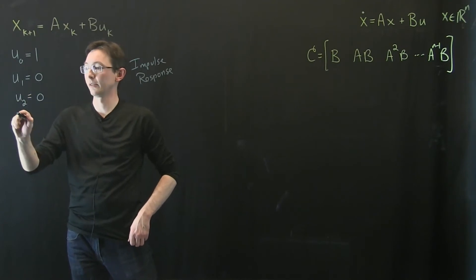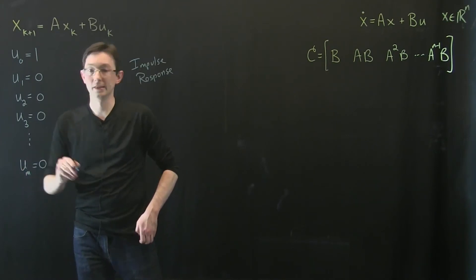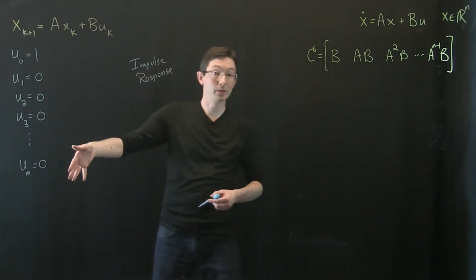So u1 equals 0, u2 equals 0, u3 equals 0, dot dot dot, down to u_m equals 0. Okay so this is an impulse in the input.